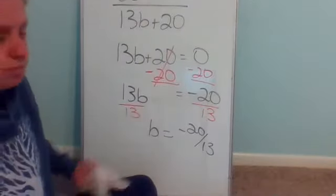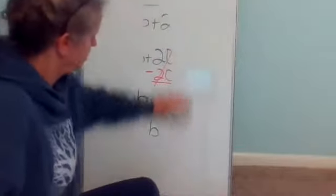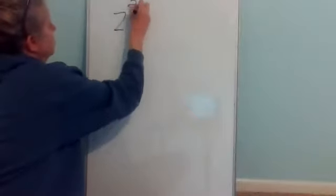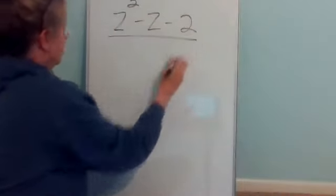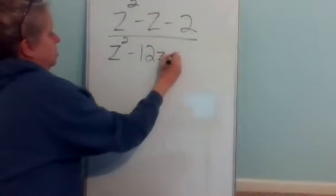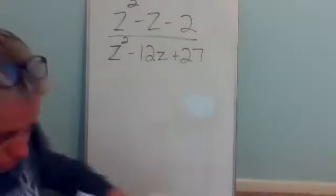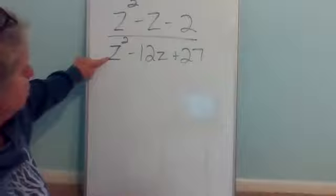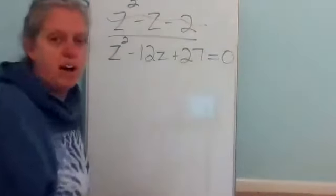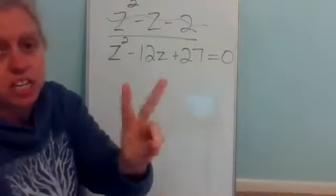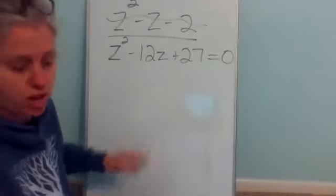Number two: Z squared minus Z minus two over Z squared minus 12Z plus 27. My denominator is Z squared minus 12Z plus 27 — I need to find what makes that equal to zero. This one is a Z squared, which tells me there are actually going to be two values that will make this one undefined.